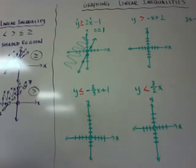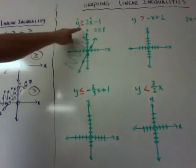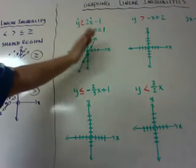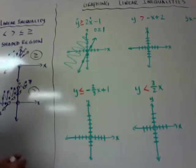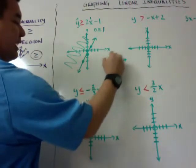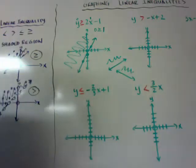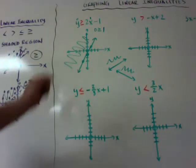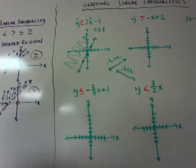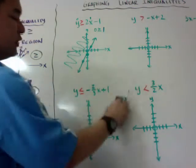Here's Mr. Mike's shortcut: if you put it into slope-intercept form and it's y is greater than, shade above the line no matter which way the line is going. If my line is going this way and it's greater than, I shade above. Think of putting a marble on top and letting it fall down — that's the top side. If it's less than, you shade below the line no matter which way it's sloping.